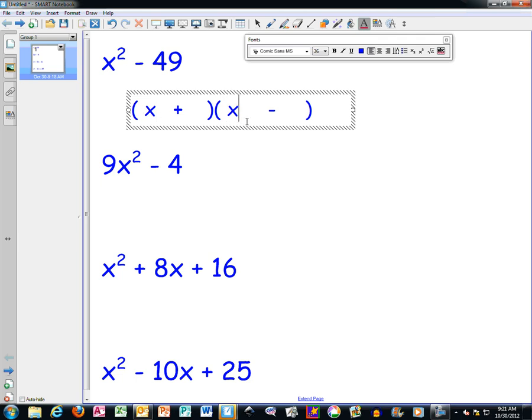So there's an x in the first part of each parentheses. And then you think about the same thing with 49. What's the square root of 49? Or what number times itself is going to give you 49? And in both cases, or either way you look at it, the answer is 7. So the answer to this problem is x plus 7 and x minus 7.